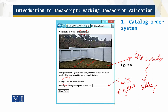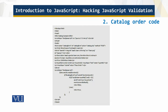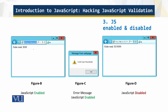This is the scenario, and the JavaScript corresponding to this code is over here — the catalog order code. It has the JavaScript and also the validation to check how many leaves are ordered. With JavaScript enabled, the person enters the number of leaves — leaves equals three — and the price is correctly shown as three hundred dollars because it is a hundred dollars per leaf of the weed.